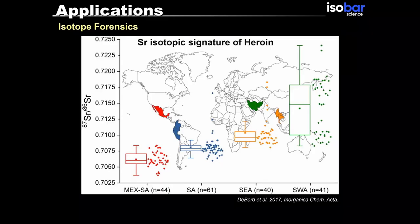Strontium also has a very broad application in forensics. Here's an example on the strontium signature of heroin. This study was done at the University of Miami. As you can see,